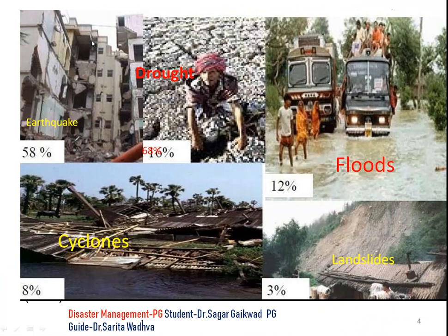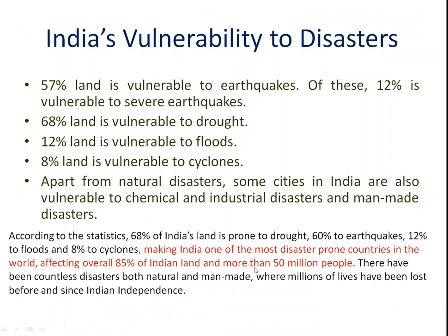These pictures show how much of Indian land is vulnerable to different kinds of disaster. For example, 58% of the total area is prone to earthquakes, and 16% faces drought threat. Out of total agricultural land, 68% is under drought threat. Floods affect areas every year, and 12% of coastal areas and river valleys are prone to cyclones. Landslides occur in hilly mountain regions and avalanches in glacier regions — making India one of the most disaster-prone countries in the world, affecting overall 80% of Indian land and more than 50 million people.